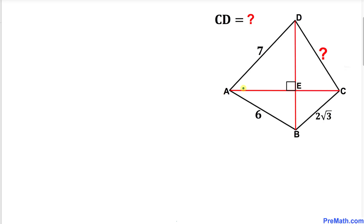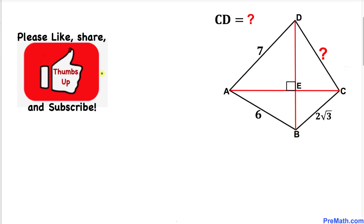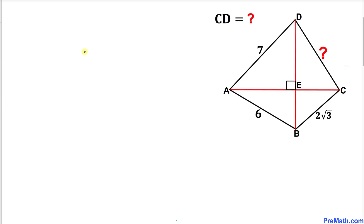Welcome to Pre-Math. In this video tutorial we have this compound diagram. Side length AD is 7, side length AB is 6, side length BC is 2 times square root of 3, and we are going to calculate side length CD. Please don't forget to give thumbs up to this video, so let's get started with the solution.